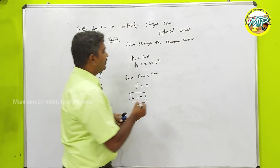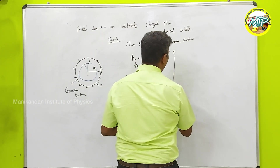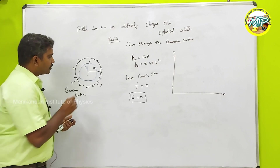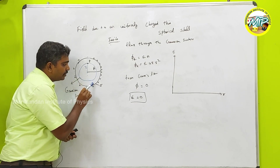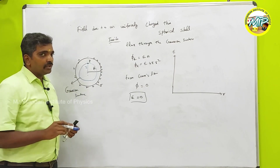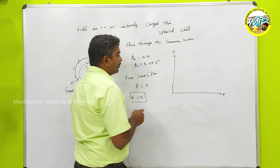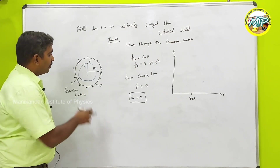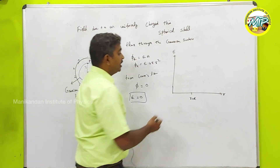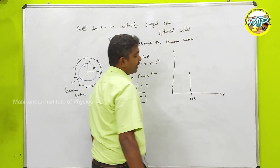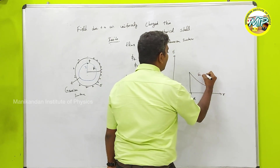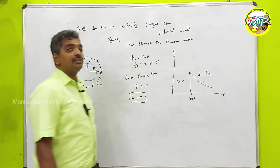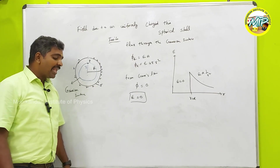Now I will plot a graph of electric field E versus position R. Inside the shell, the electric field is zero up to radius capital R. The electric field is maximum at the surface of the sphere. Beyond the surface, as we move outside, the electric field decreases, being inversely proportional to R squared. So the electric field inside the shell is zero, and outside the shell it is inversely proportional to R squared.